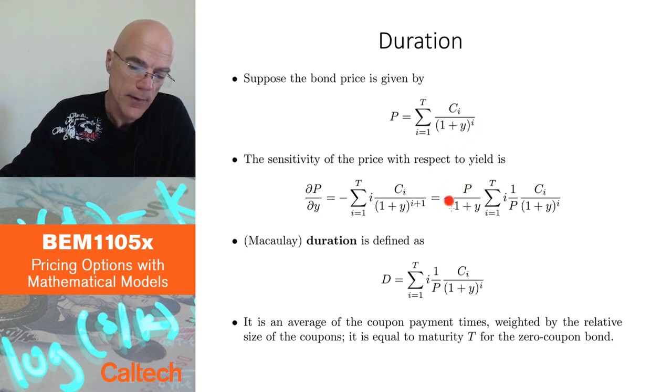Then I am going to factor out minus P over (1+Y), that happens to be convenient normalization. And the remaining factor is this. I am going to give it a name and that's what I call duration. Denoted by capital D and this is called duration.